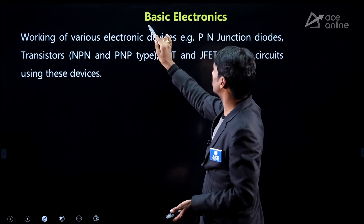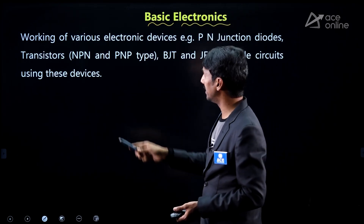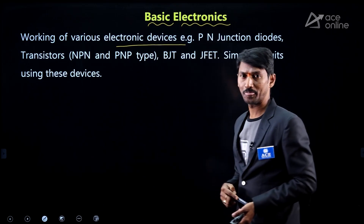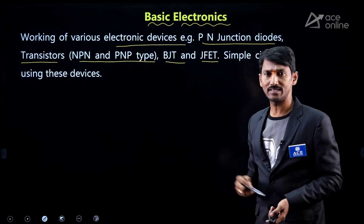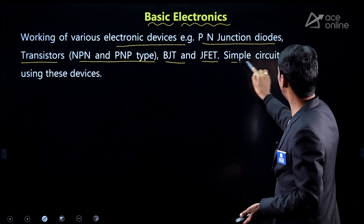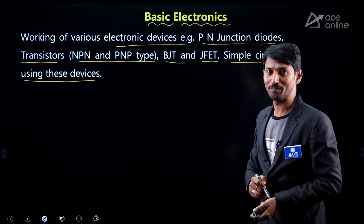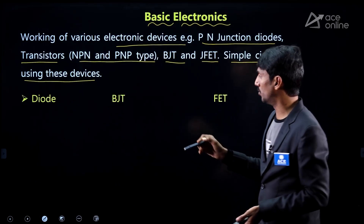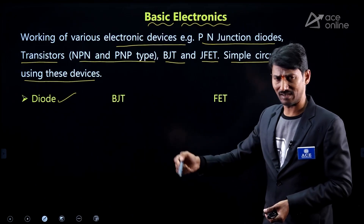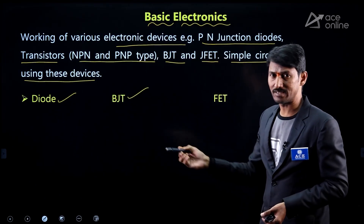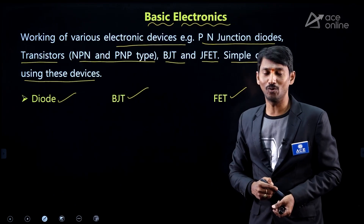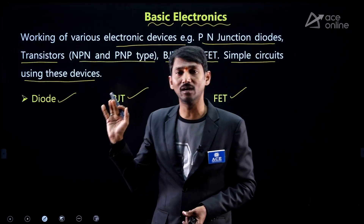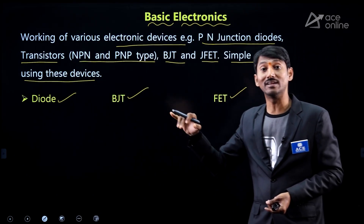The next subject is Basic Electronics. The syllabus covers working of various electronic devices — PN junction diodes, transistors (NPN and PNP types), BJT (Bipolar Junction Transistor), JFET (Junction Field Effect Transistor), and simple circuits using these devices. Focus more on diodes (forward bias, reverse bias, and related concepts), BJT, transistors, and FET to get a better chance of scoring well.